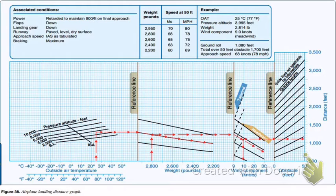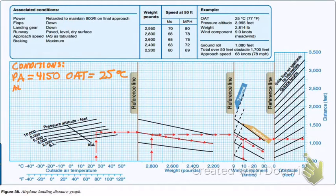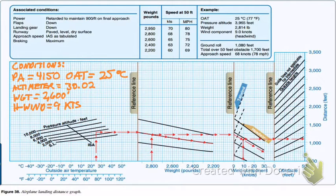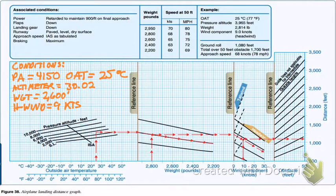Now let's look at our landings. Same basic idea as the takeoff chart. We'll set the same conditions, except this time we'll use a lighter aircraft weight to account for a hypothetical fuel burn. Pressure altitude is again 4,150 feet — we're landing at the same airport. Outside air temperature is again 25 degrees. Altimeter is the same at 3002. Our weight is 2,600 pounds. And our headwind is again 9 knots.